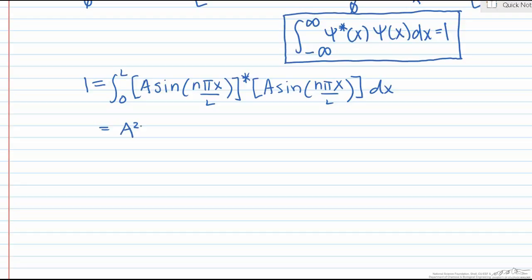We know that A, in this case, from our wave function is just a constant. That's the constant we're trying to solve for. So we can pull this out of our integral. And what we're left with is the integration from 0 to L of sin²(nπx/L) dx.